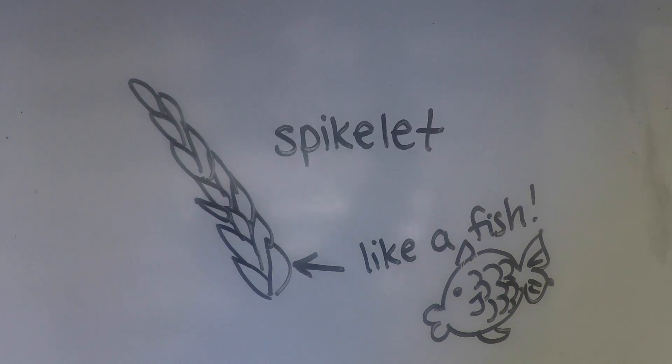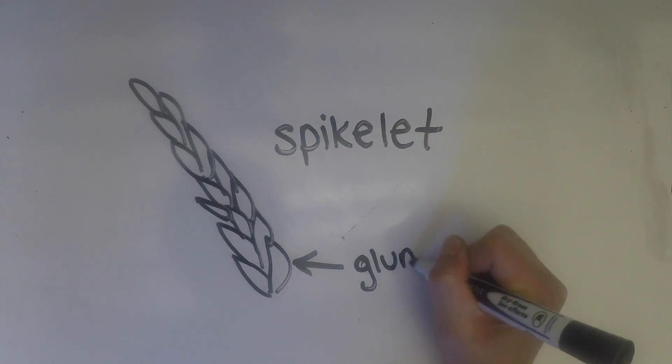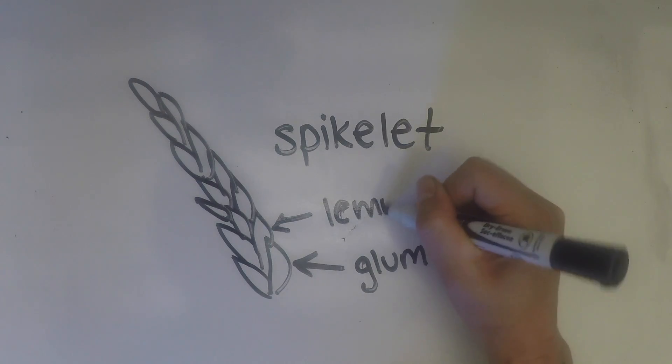In general, the two lowermost scales are called the glumes. The next set of scales above the glumes are called the lemma, which enclose the grass seed. Spikelets can have between 1 and 70 lemmas.